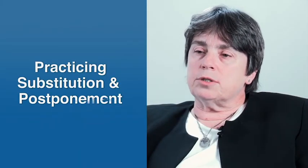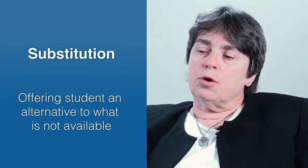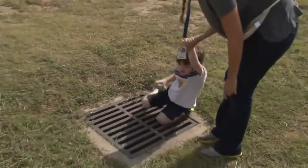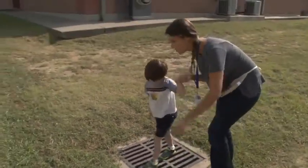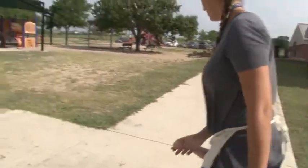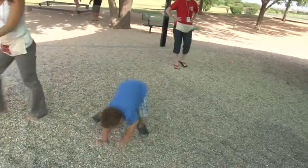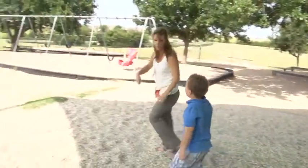There are four ways that you teach impulse control. The first is by practicing substitution and postponement. An example of substitution is saying to a child, 'I know you would love to do that right now. I can hear what you're saying. I see how badly you want to do that right now. I wish I could offer that to you, but that's not available — I can offer you this instead.' So that's substitution — you give them some alternative.